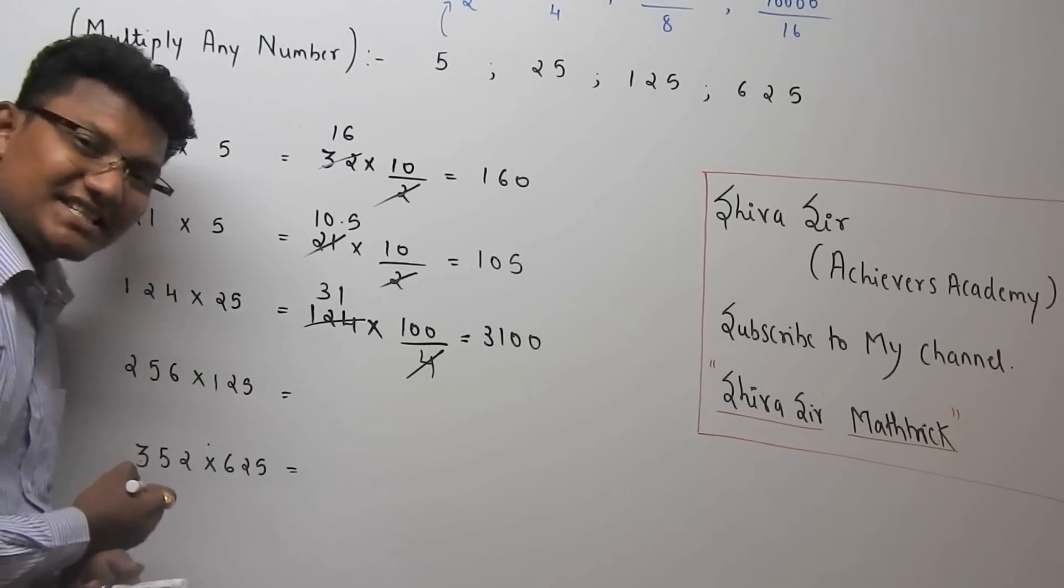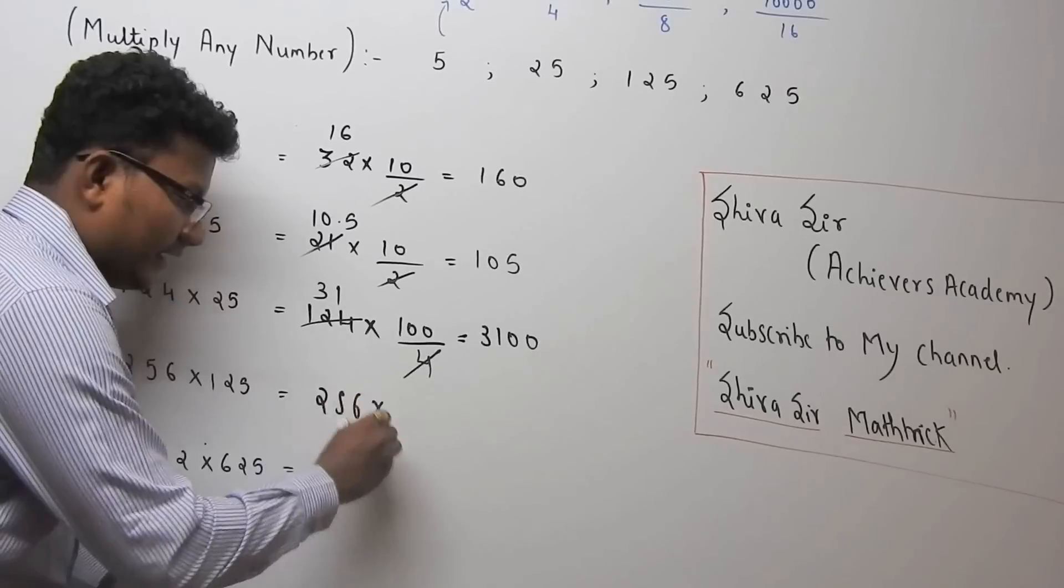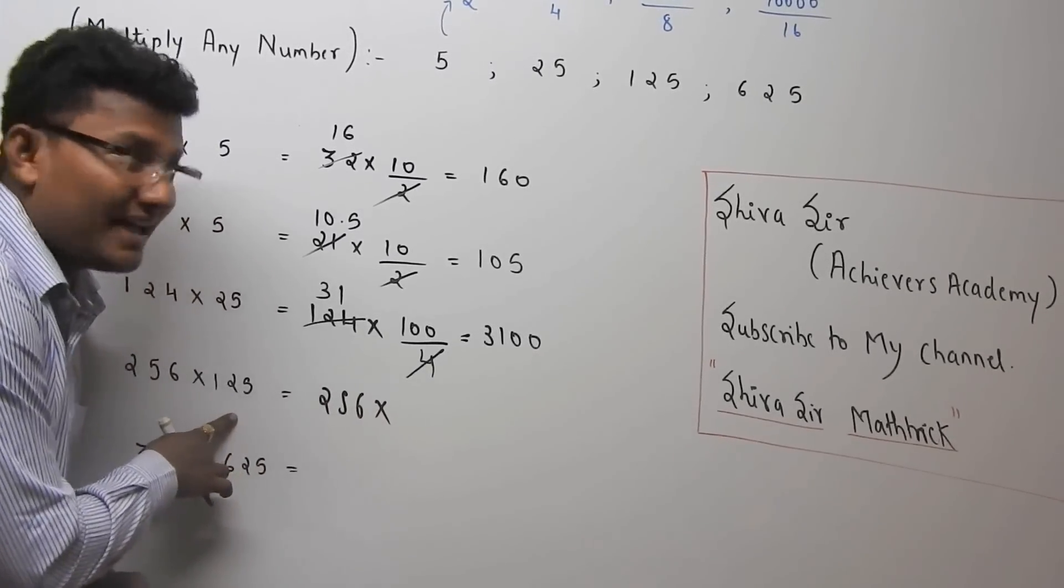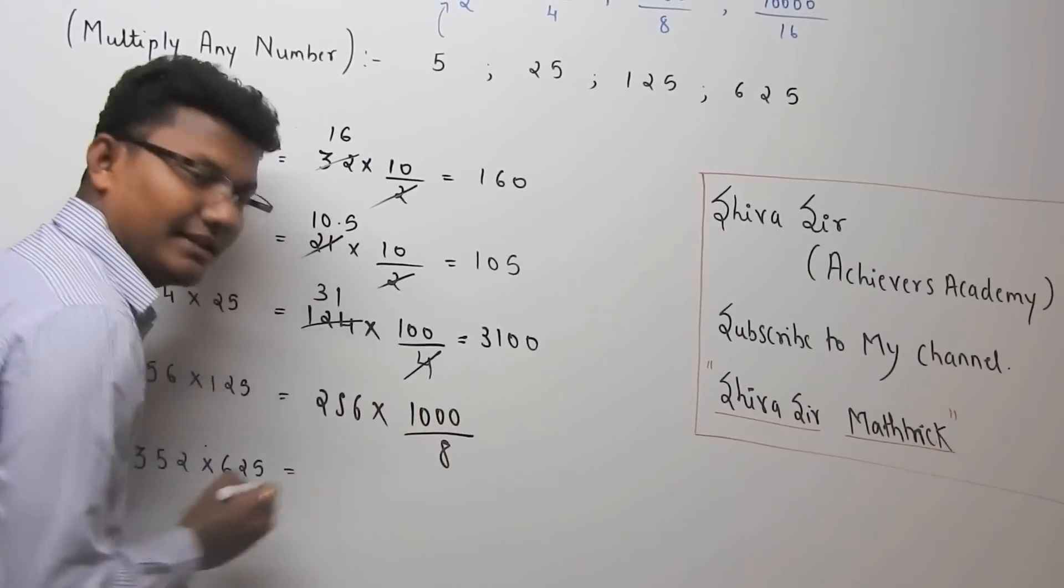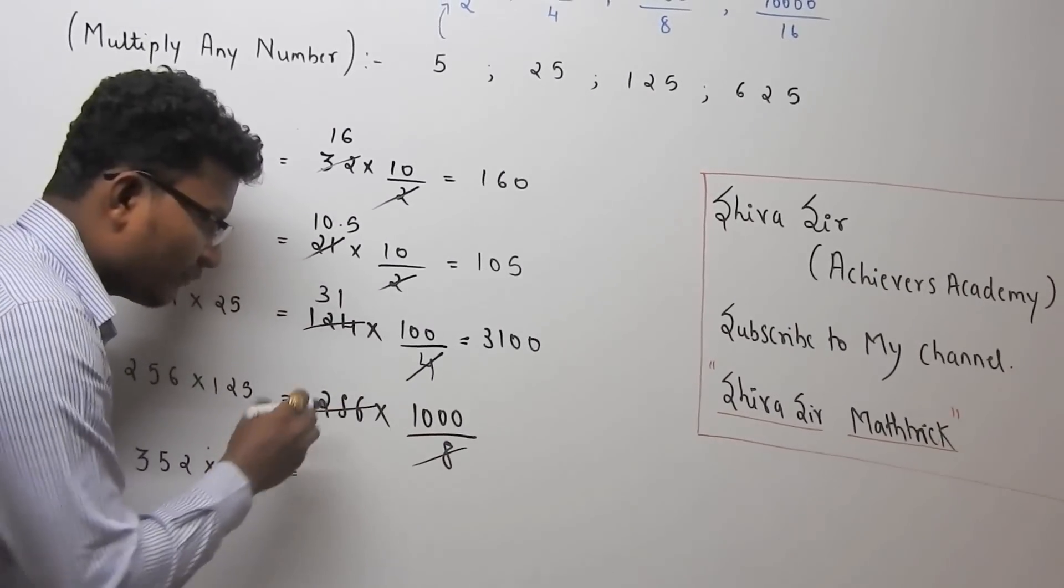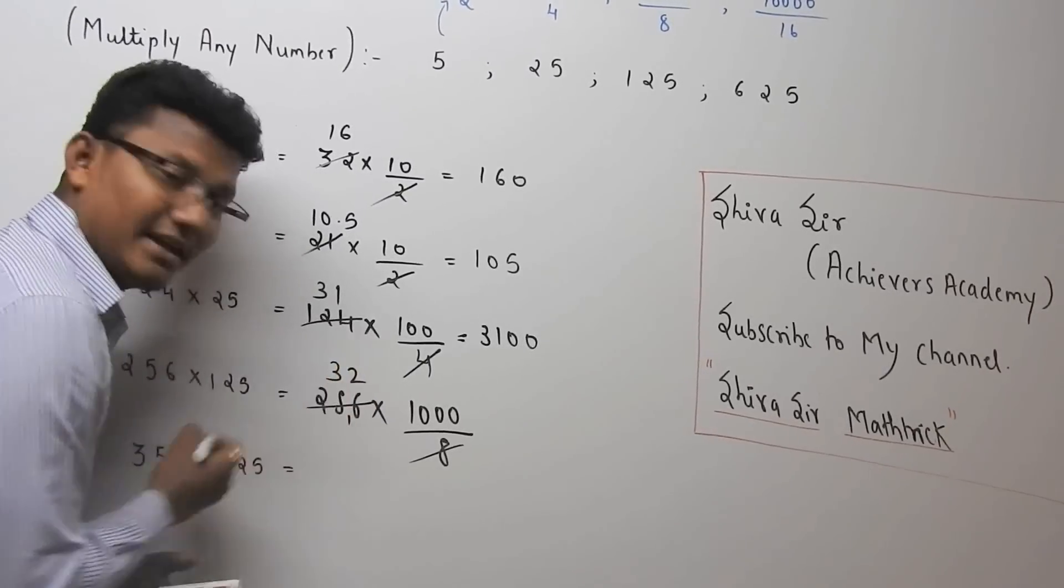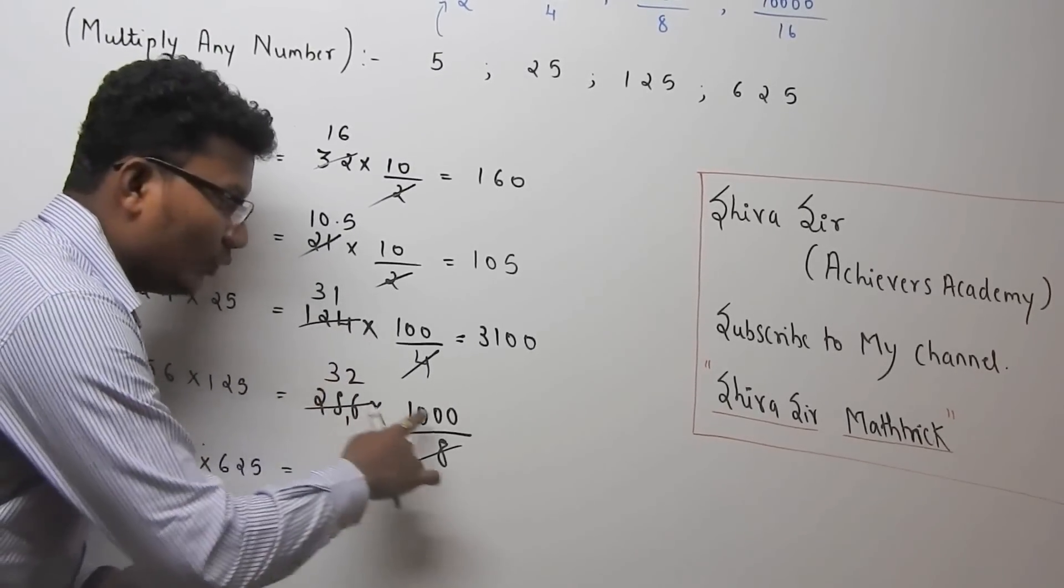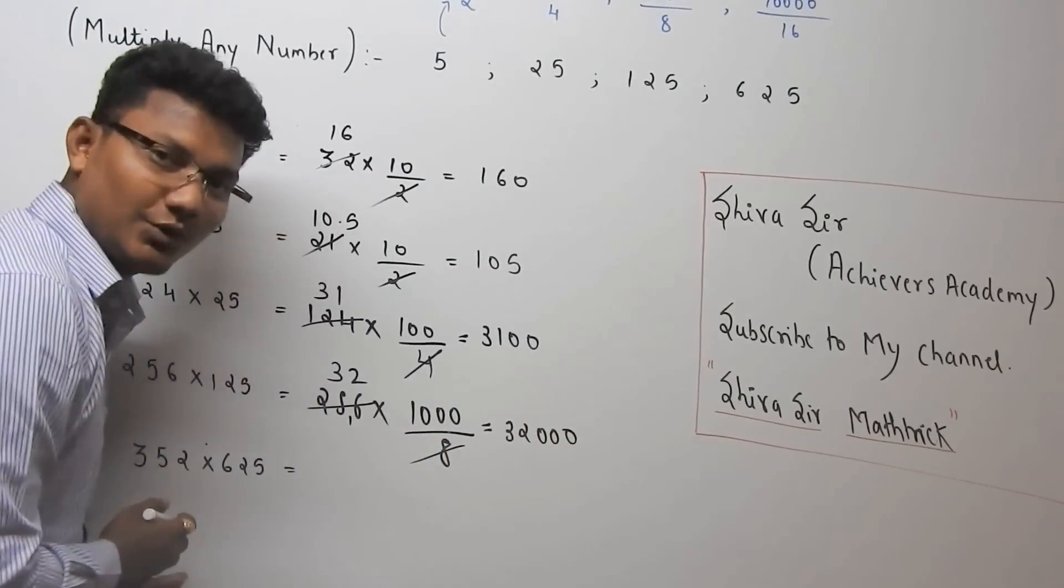Now focus on the next example. 256 into 125. So 256, this 125 I can write as 1000 upon 8. Cancel out. 256 divided by 8 is 32. So 32 into 1000 will give 32000.